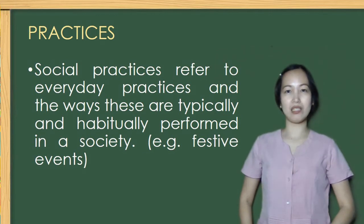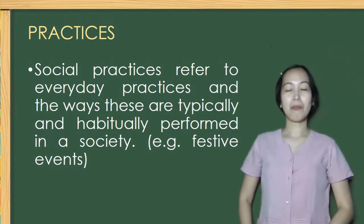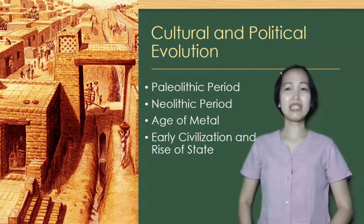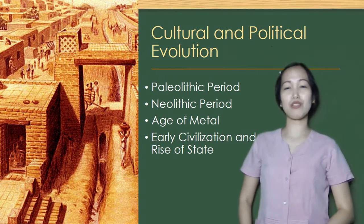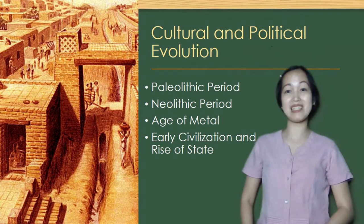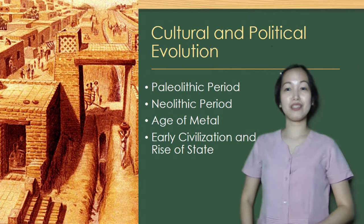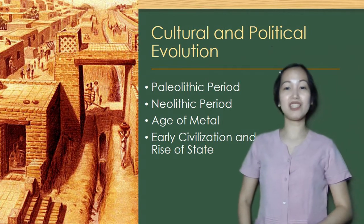Next is practices. Social practices refer to everyday practices and the ways these are typically and habitually performed in a society — for example, festive events. The physical as well as mental development of early human beings helped them understand and adapt to their existing environment. As we go on, you will learn the different cultural and political developments that happened to human beings.